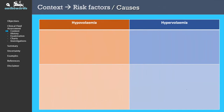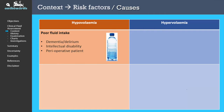Let's go through some risk factors for hypo or hypervolemia. For hypovolemia, we start with poor fluid intake. For patients with dementia, delirium or intellectual disability, they may not be able to respond to their thirst reflex, which means that they have poor fluid intake. With a perioperative patient, there may be an extended period of time where they may be nil by mouth prior to the operation. And even after the operation, when recovering from the anesthetic, they may not be drinking or eating as much as they normally would.